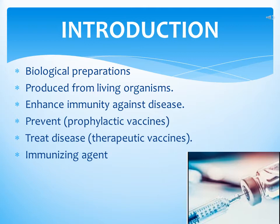Vaccines are administered into the host body through a process called immunization. Broadly, we can categorize vaccines into two types: prophylactic vaccines and therapeutic vaccines. Prophylactic vaccines are designed to build immunity by introducing antigens into a person's body, so the immune system creates antibodies and becomes immune to the associated illness. A therapeutic vaccine, on the other hand, is administered after the disease or infection has already occurred, and works by activating the immune system to fight the specific antigen or causative agent.